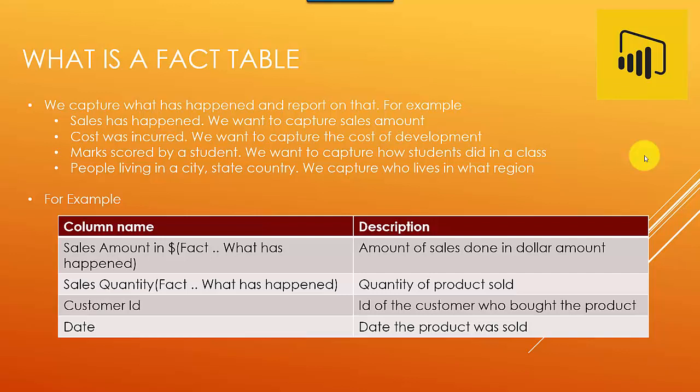Maybe we want to capture the people living in a particular state or country. We just want to capture how many people are living in a country - how many people in a city, how many people in a state, how many people in a country. Typically a fact table will capture what has happened and we want to report on that, and these would normally be numeric values.